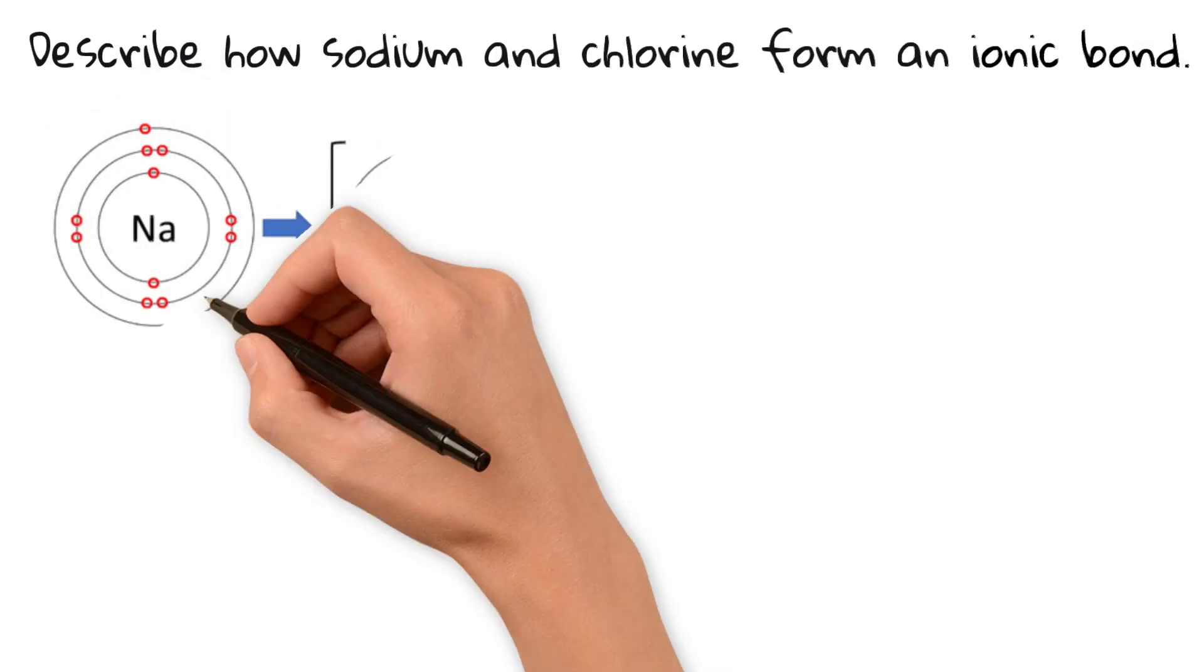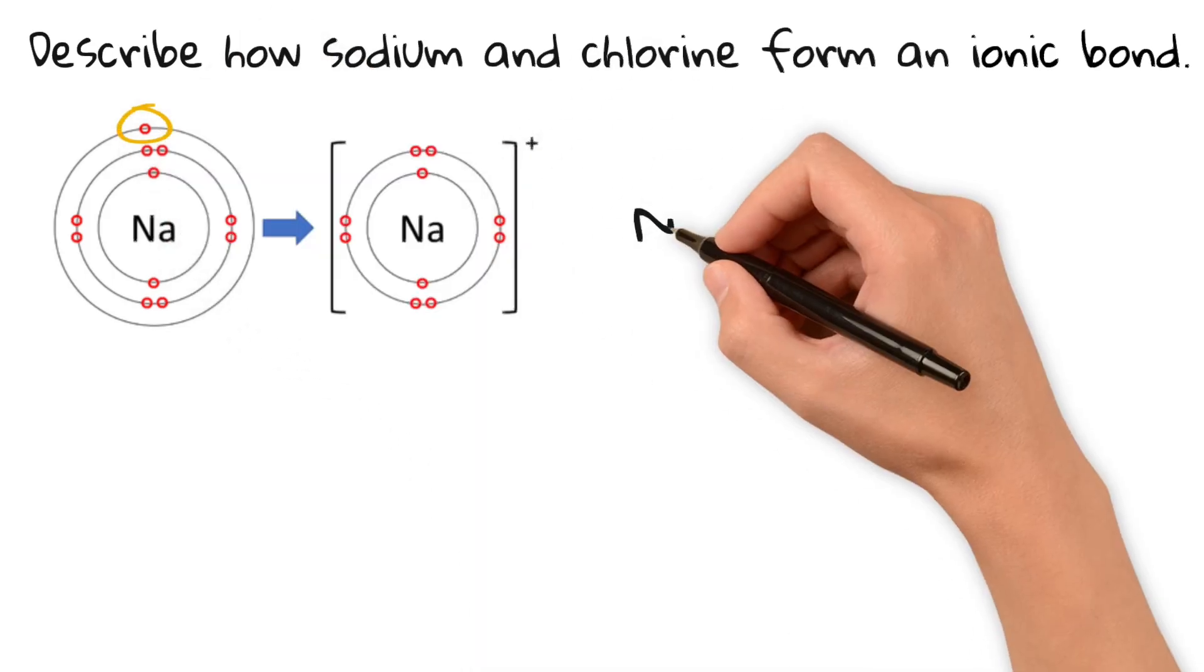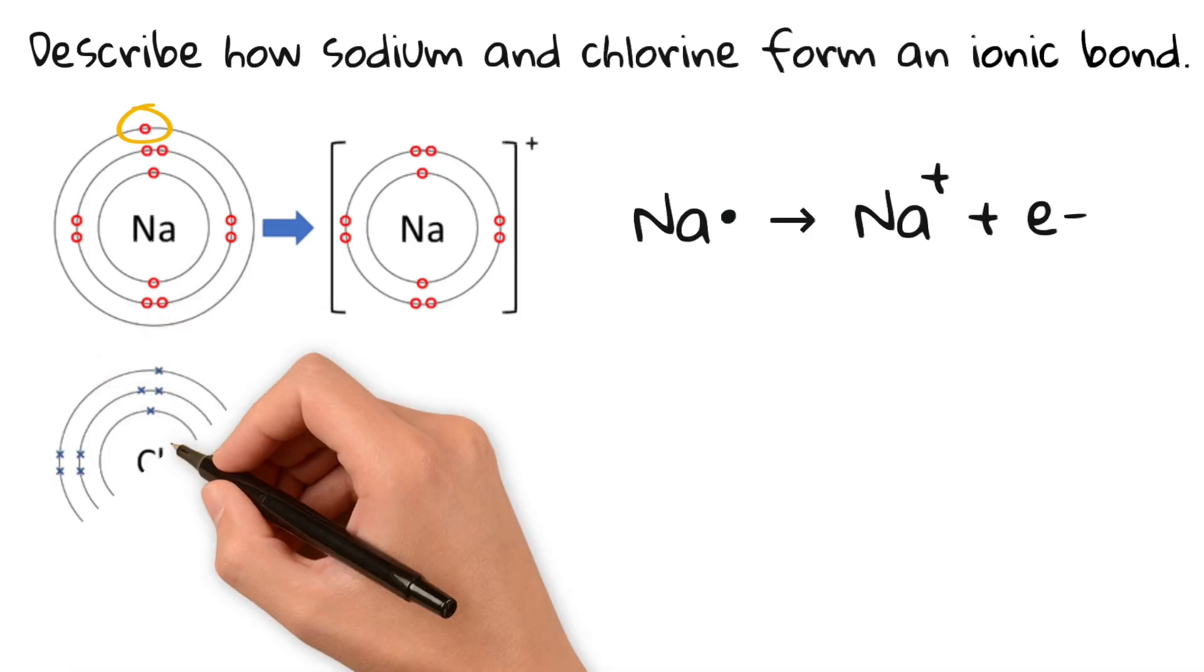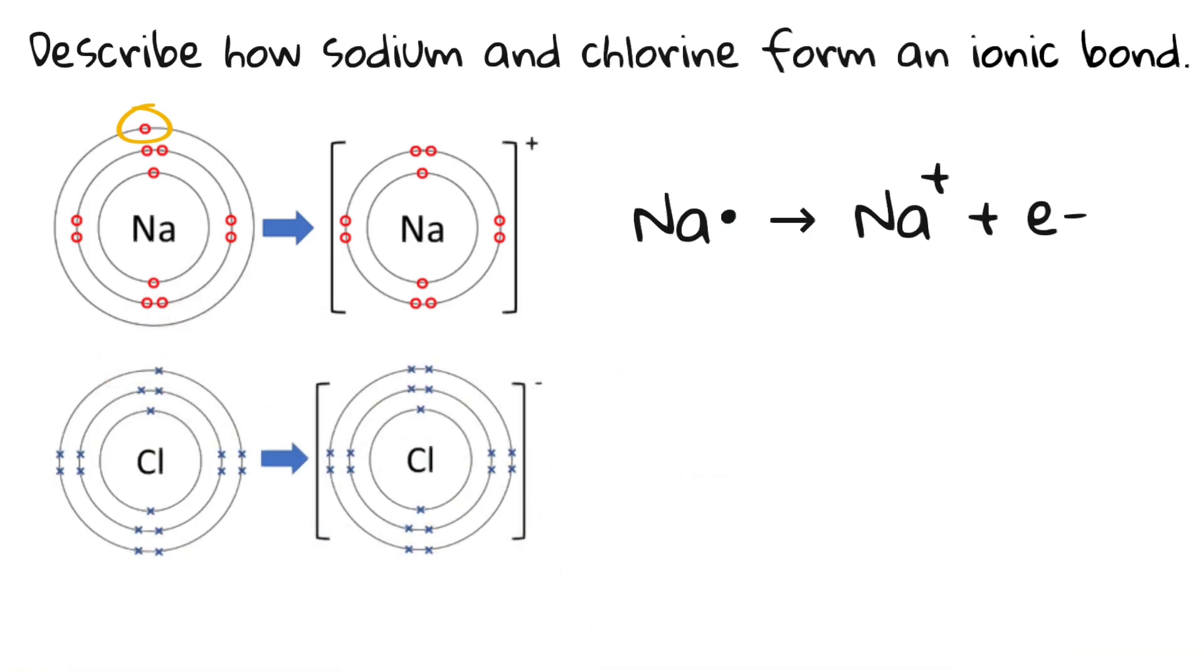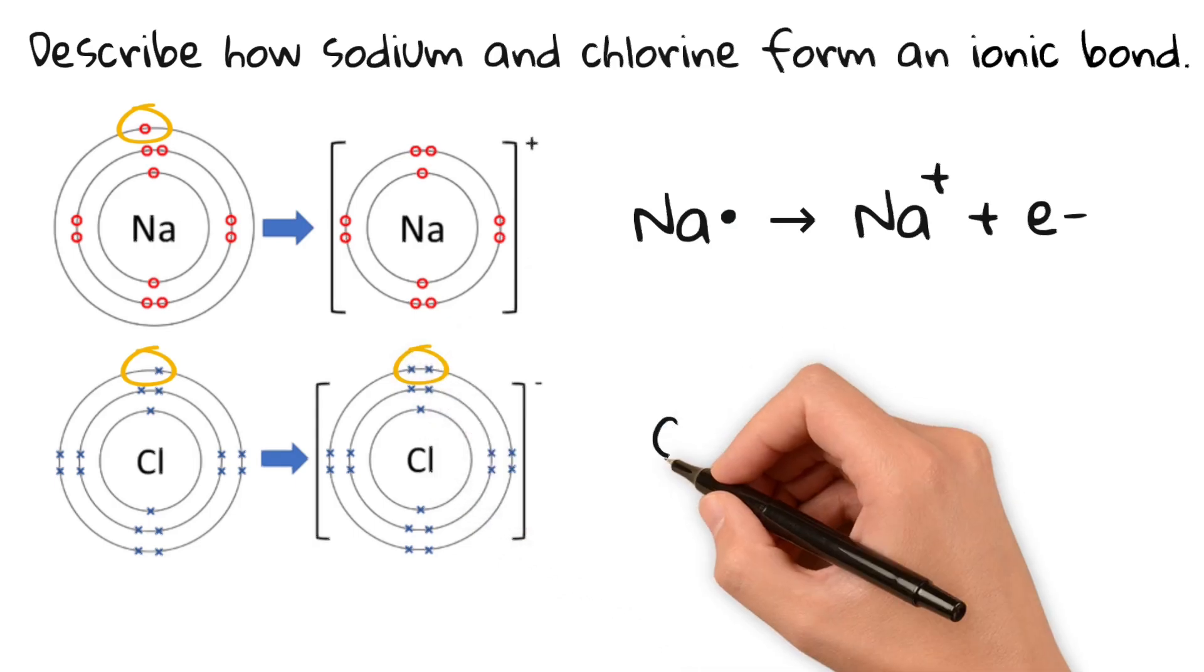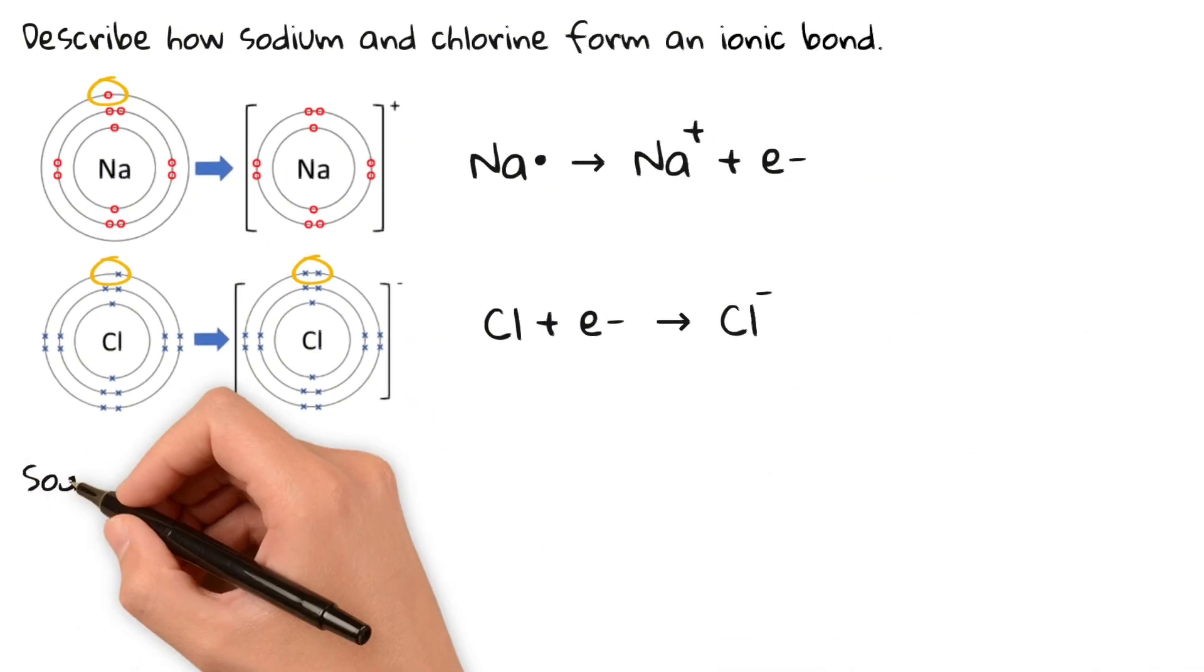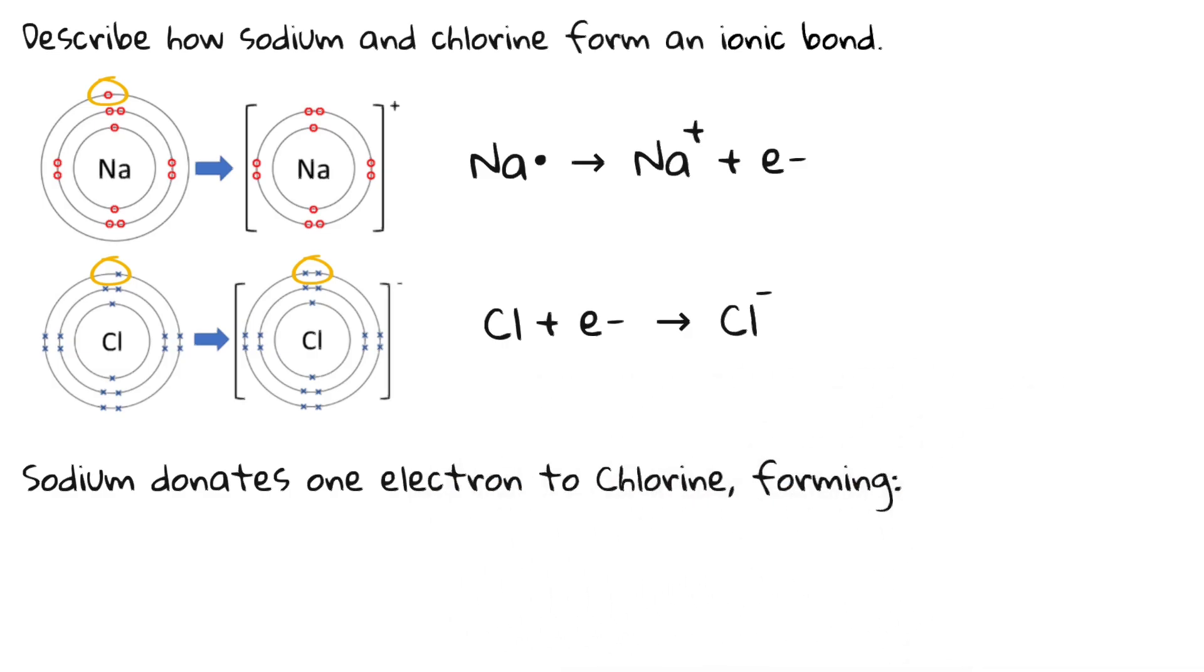Sodium is a group one metal so it has one valence electron. It loses it to get a full outer shell. Chlorine on the other hand is a group seven non-metal. It has seven valence electrons and it likes to gain one electron to complete its shell. So sodium donates one electron to chlorine forming Na+ and Cl-. Those two ions have opposite charges and are attracted to each other forming an ionic bond.